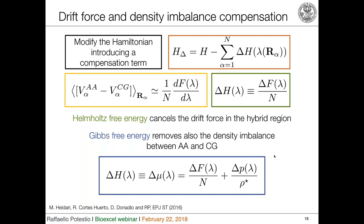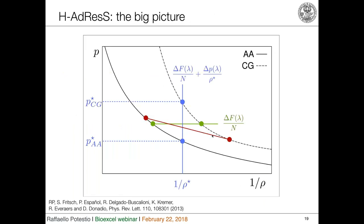In qualitative terms, the two models in the system follow different equations of state. If you correct for the drift force alone, you obtain the same pressure for both regions but a different density. If you also include a term correcting for the chemical potential difference as a function of resolution, you obtain different pressures for the same density — specifically the pressures at which each model separately has that particular density at that temperature.